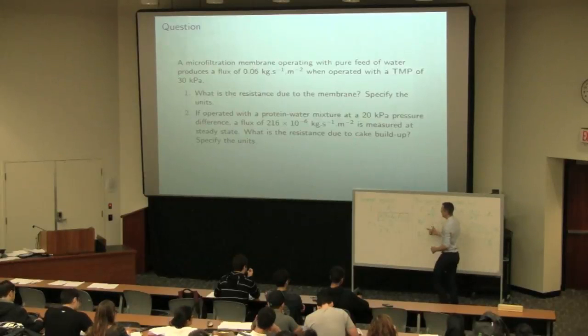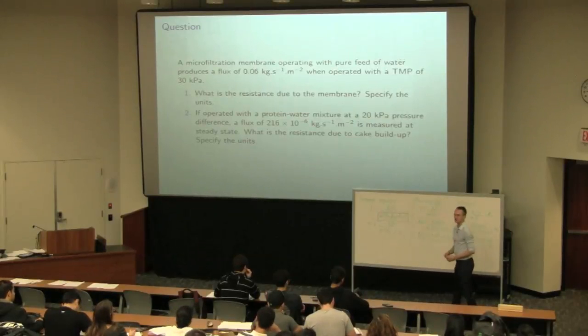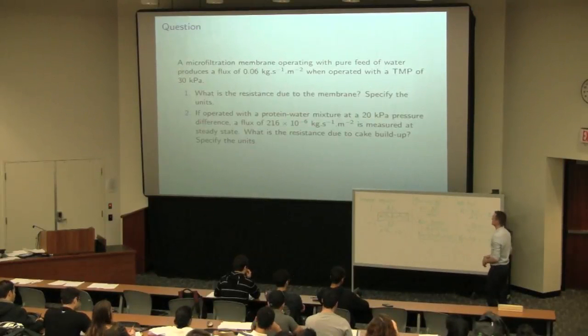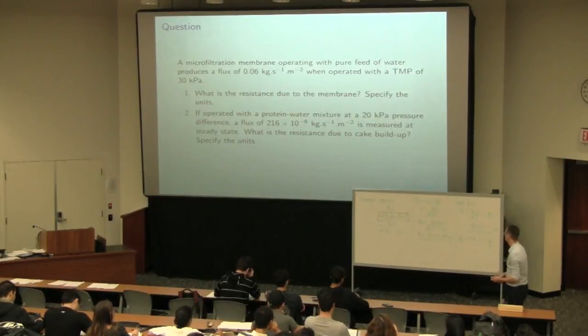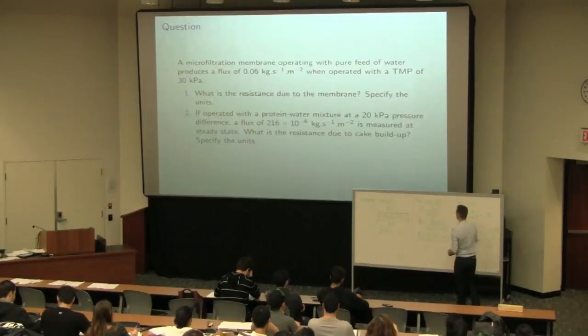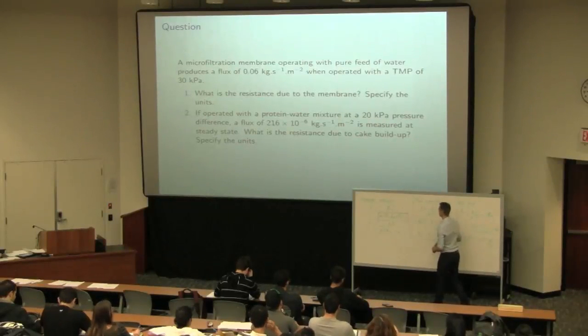So the easiest way to determine what these individual resistances are, and that's exactly what part one and part two of the question were, were to isolate, to quantify those resistances. Due to the membrane itself, the standard way to do that is to run a pure water test. So just the water itself, no solid component that's going to build up, so we have our resistance due to the cake term disappearing.